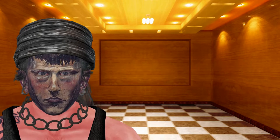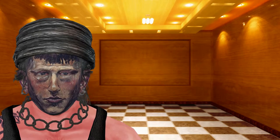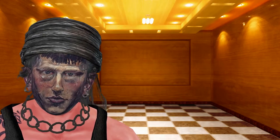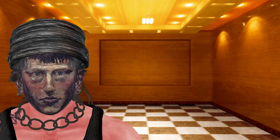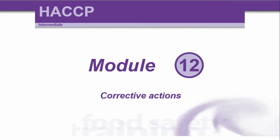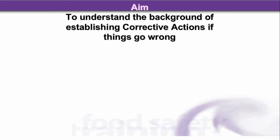It's time for Module 12 of the HACCP Intermediate Course. What do we do if things go wrong? The aim of this unit is to understand the background of establishing corrective actions if things go wrong.